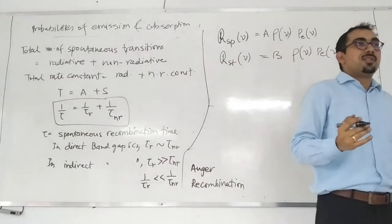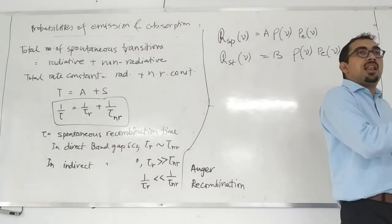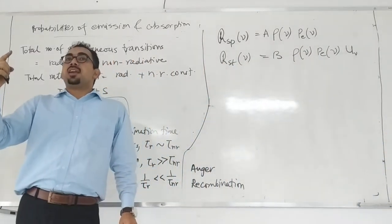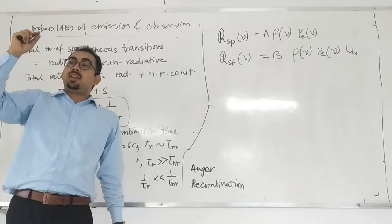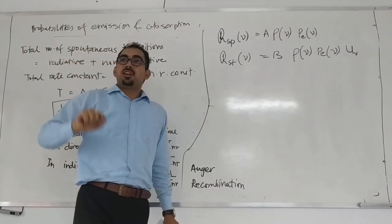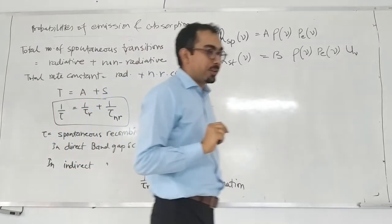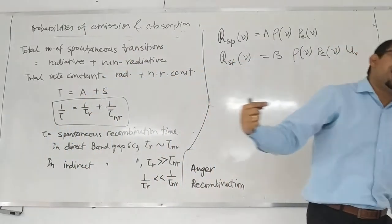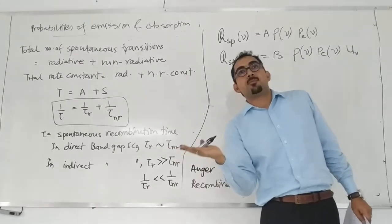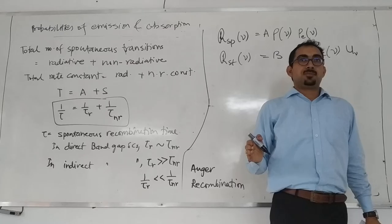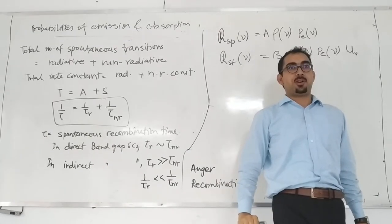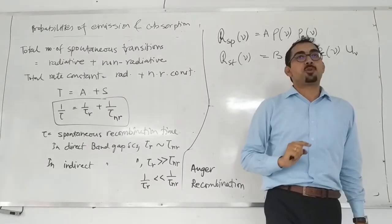What is stimulated emission? Stimulated emission is when the light field, the electromagnetic field, stimulates an emission when an electron is already in an excited state. It pushes an electron from the excited state to the ground state. This is very counterintuitive — you always think that light will make a transition from a valence band to a conduction band, but you never think it can actually make a transition from a conduction band to a valence band.